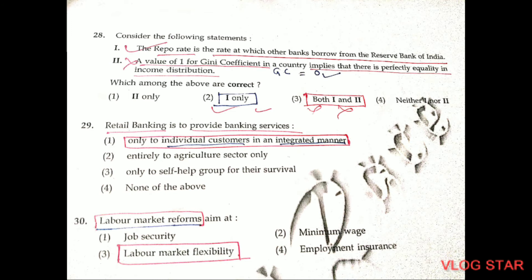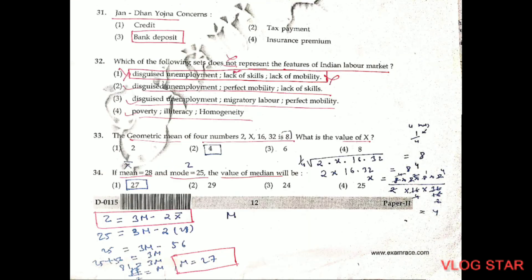Question number 30. Labour market reforms aim at labour market flexibility. Question number 31. Jan Dhan Yojana concerns bank deposits — it was created so that everyone has a bank account. Question number 32. The first option does not represent the features of the Indian labour market — it lists disguised unemployment, lack of skills, and lack of mobility. The second, third, and fourth options represent actual features: disguised unemployment with perfect mobility, migratory labour, and poverty, illiteracy, and homogeneity.